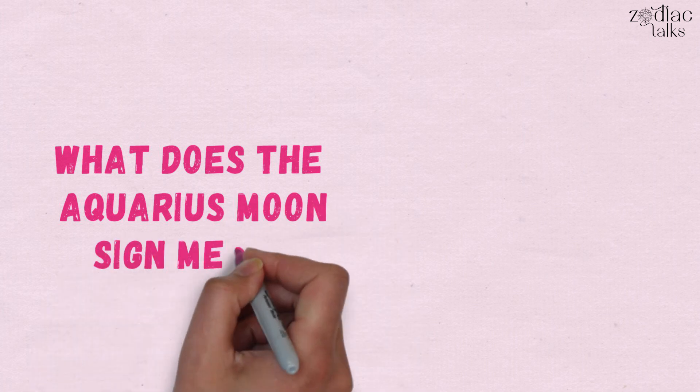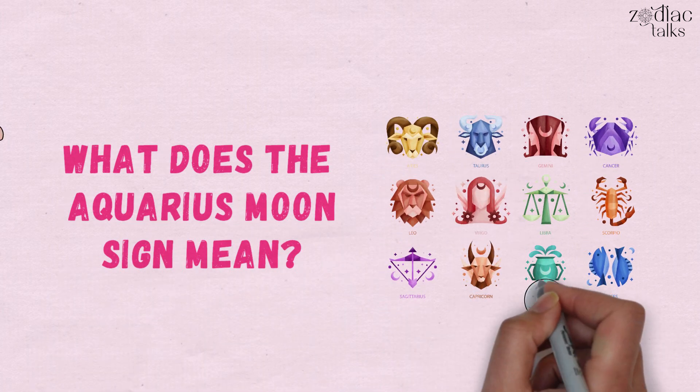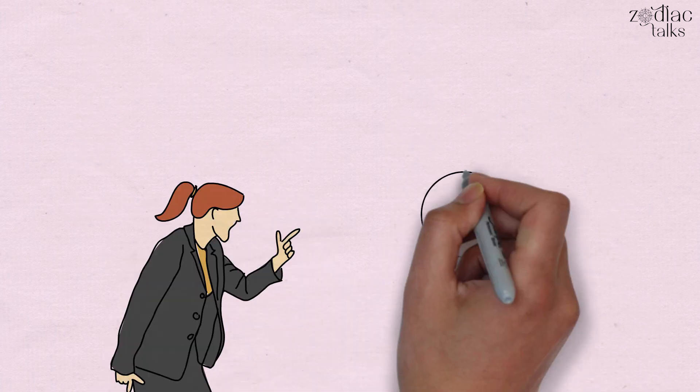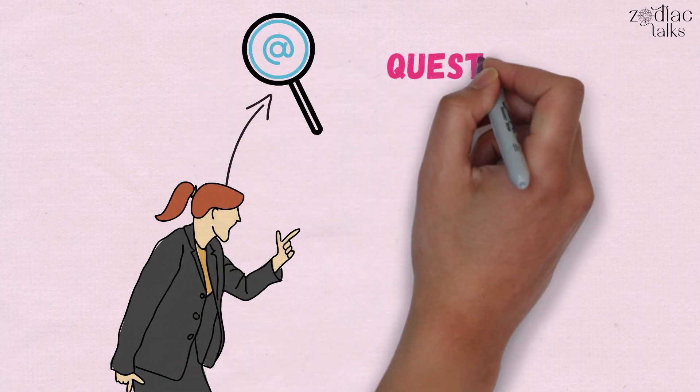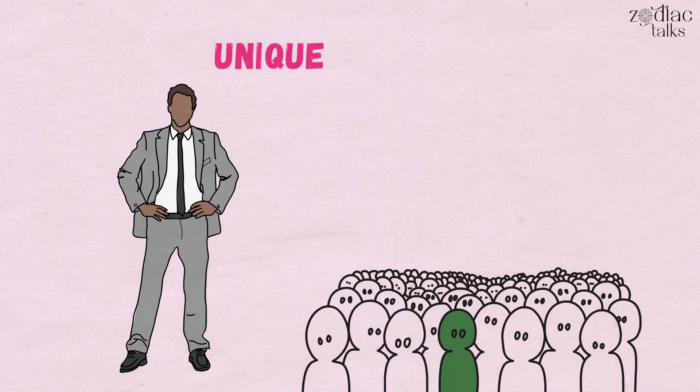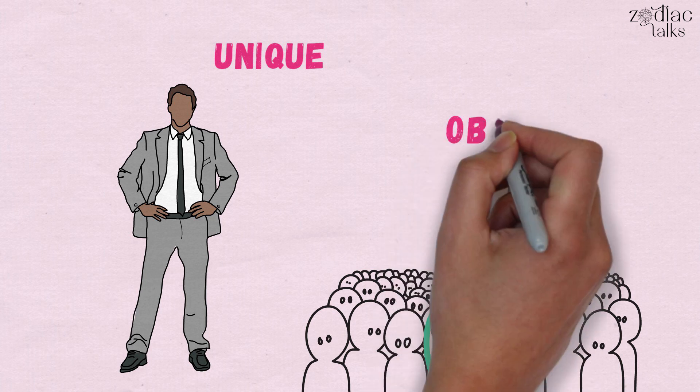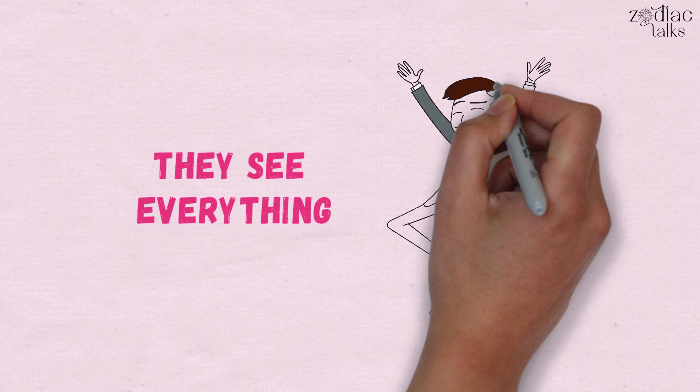What does the Aquarius moon sign mean? The Aquarius moon sign means that the moon was in Aquarius at the time of your birth. Oddballs and anarchists are ruled by the moon in Aquarius. They're designed to keep an eye on things, question, and disrupt. They're naturally quiet and noticeably unique, and they frequently feel like outsiders, a lonely position that allows them to observe. They see everything and are enthralled by the scenery.